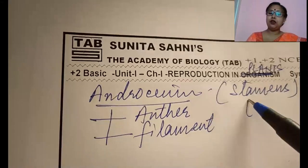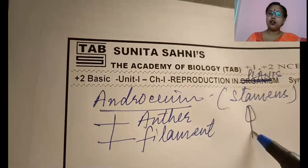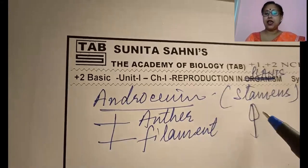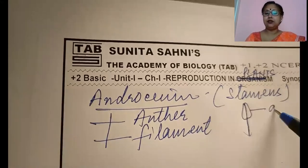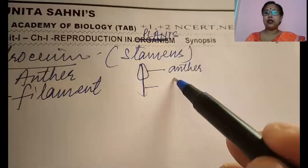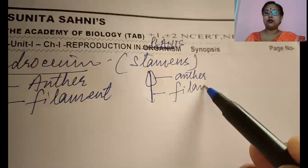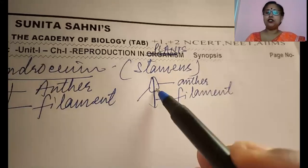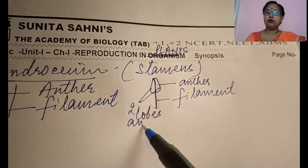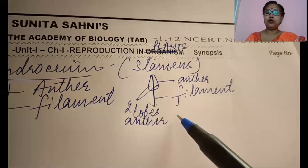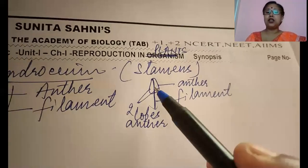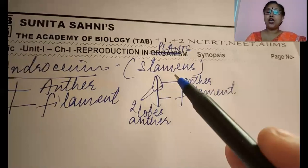If we see androsium morphologically, it contains an anther which is bilobed in angiosperms, and this is the filament. The function of the filament is just to attach the anther to the flower. The anther is bilobed because it contains two lobes — therefore we give the term bilobed anther, which is a characteristic feature of angiosperms.